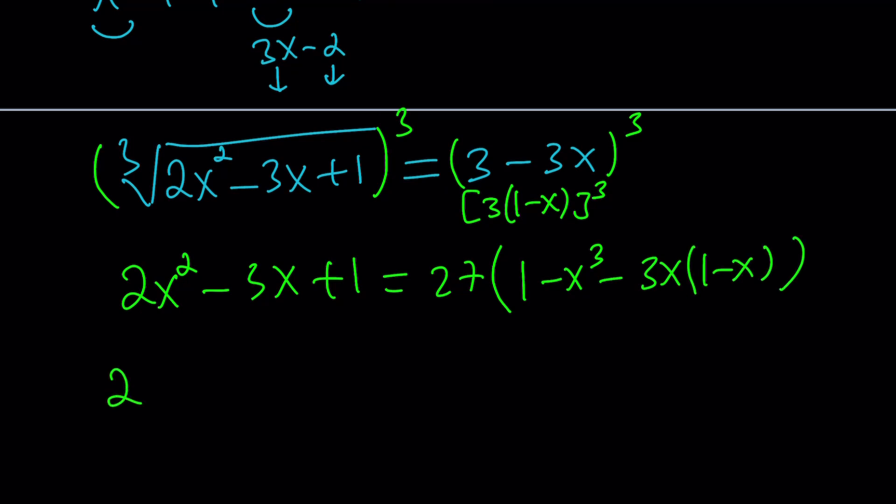And then we get 2x squared minus 3x plus 1 equals, let's simplify inside first. I don't think there's any like terms, so I might as well just multiply everything by 27. 27 and then minus 27x cubed. This is going to give me negative 3x, so that's going to be negative 81x. This is going to give me positive 3x squared, that's going to turn into 81x squared, positive. Positive times positive.